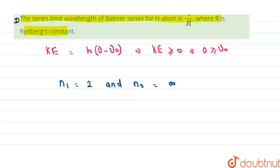n₁ = 2 and n₂ = ∞. This is the series limit. For this, we calculate the wavelength: 1/λ = RZ²(1/n₁² - 1/n₂²). For hydrogen atom, Z = 1, so 1/λ = R(1/4 - 1/∞) = R/4. Therefore, λ = 4/R, which is the series